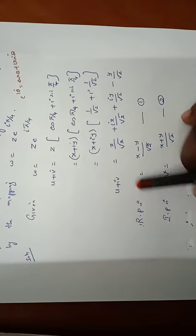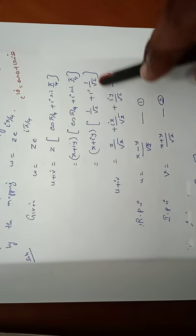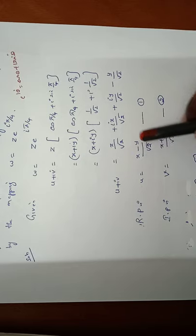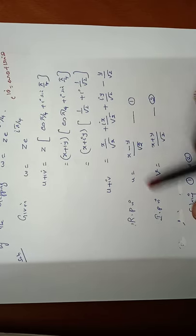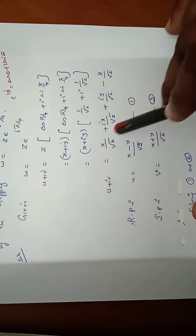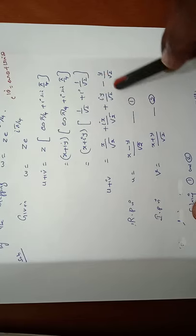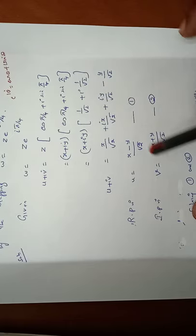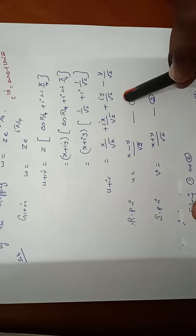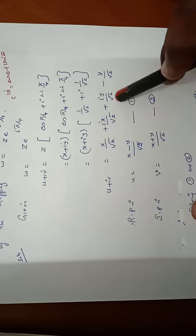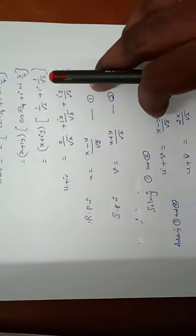Separating real and imaginary parts: the real part gives u equal to x minus y by root 2 — this is equation number 1. The imaginary part gives v equal to x plus y by root 2 — this is equation number 2.